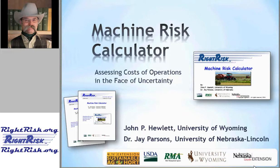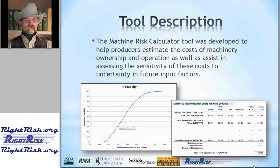These tools are designed to help you make risk-adjusted estimates of the cost for individual machines, as well as for field operations where we combine power units with implements to complete a field operation. This tool helps producers estimate the cost of machinery ownership and operation, and gives a feel for the sensitivity of those costs to uncertainty in the future. It's based on an update of previous bulletin and software developed here at the university, with the added dimension of risk.